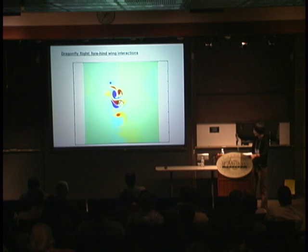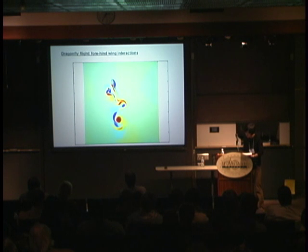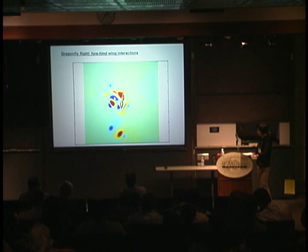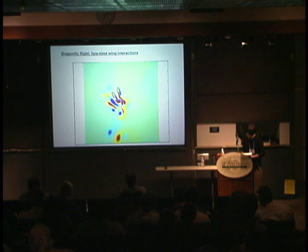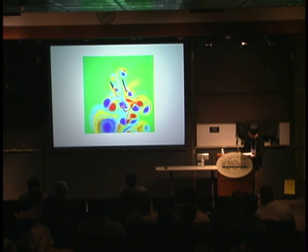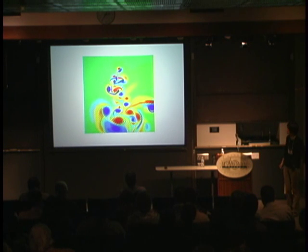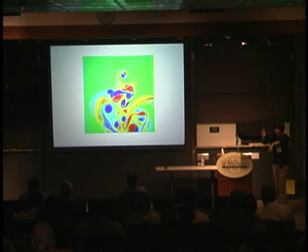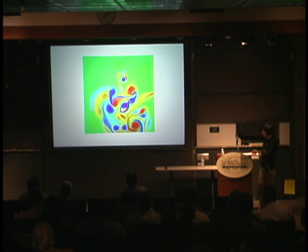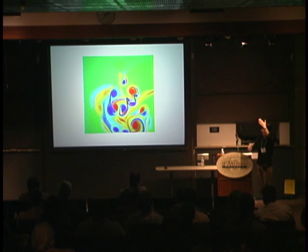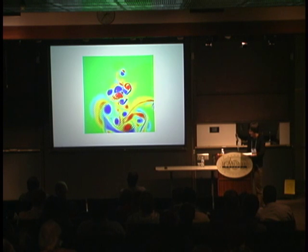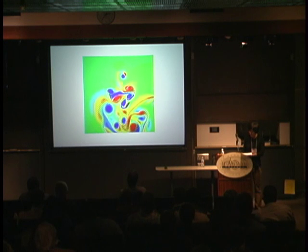Now we have the computational method. Here, for example, is a simulation of two wings moving in sync. One natural thing to look at is the effect of the phase delay between the fore and hind wing on force generation. The simulation uses the previous method done by David Russell, following the exact 3D kinematics projected to this 2D plane. Here is the vorticity field they create. Reynolds number here is about 1,000.